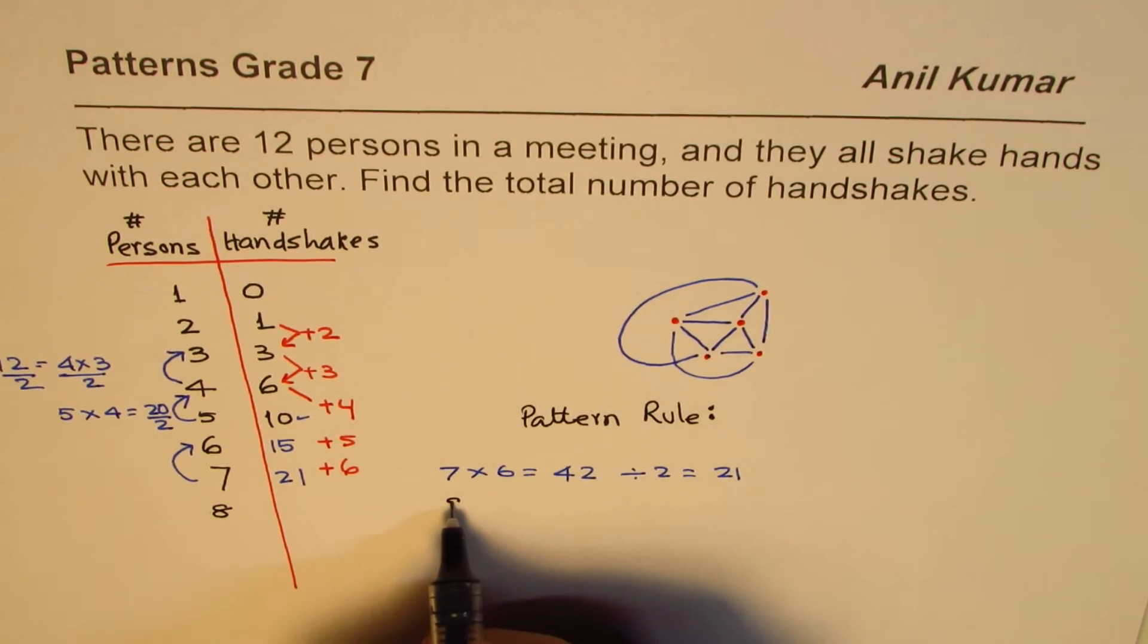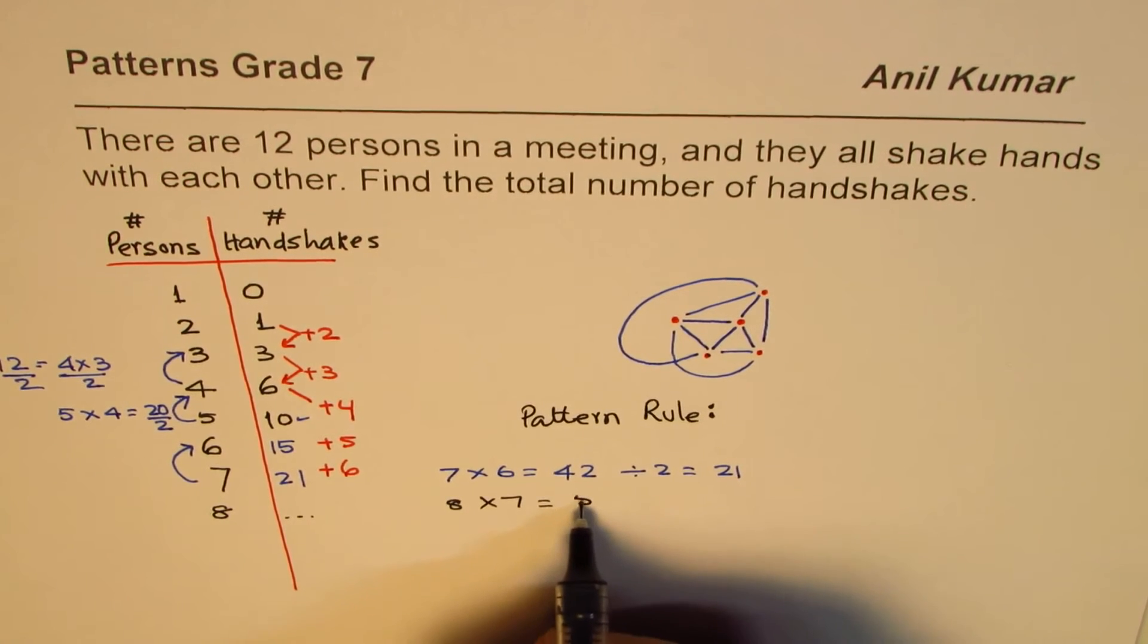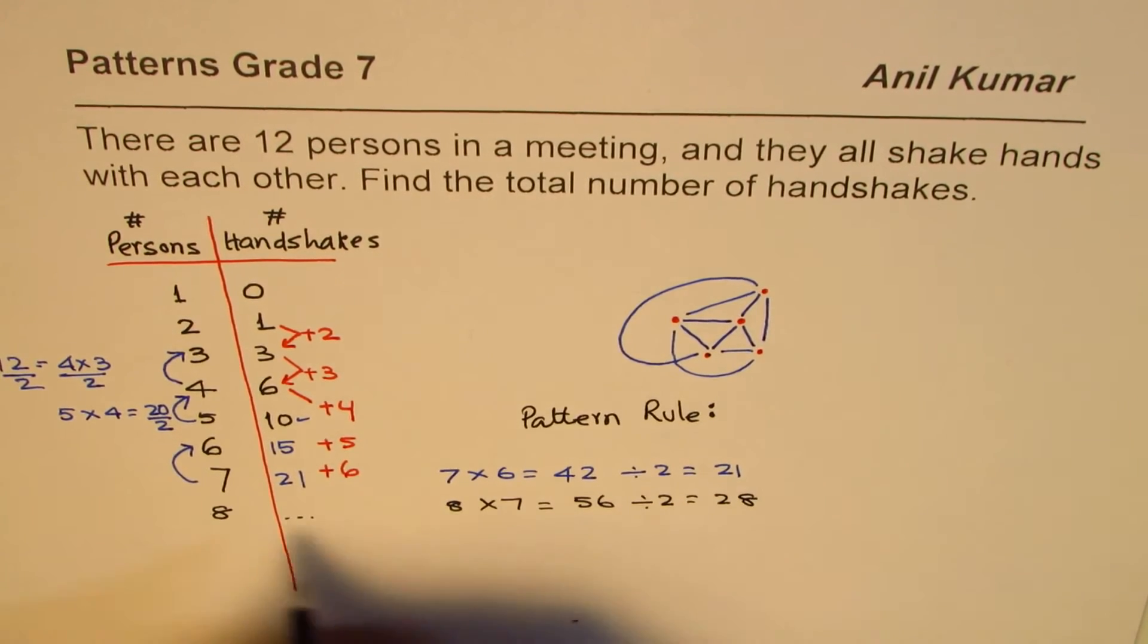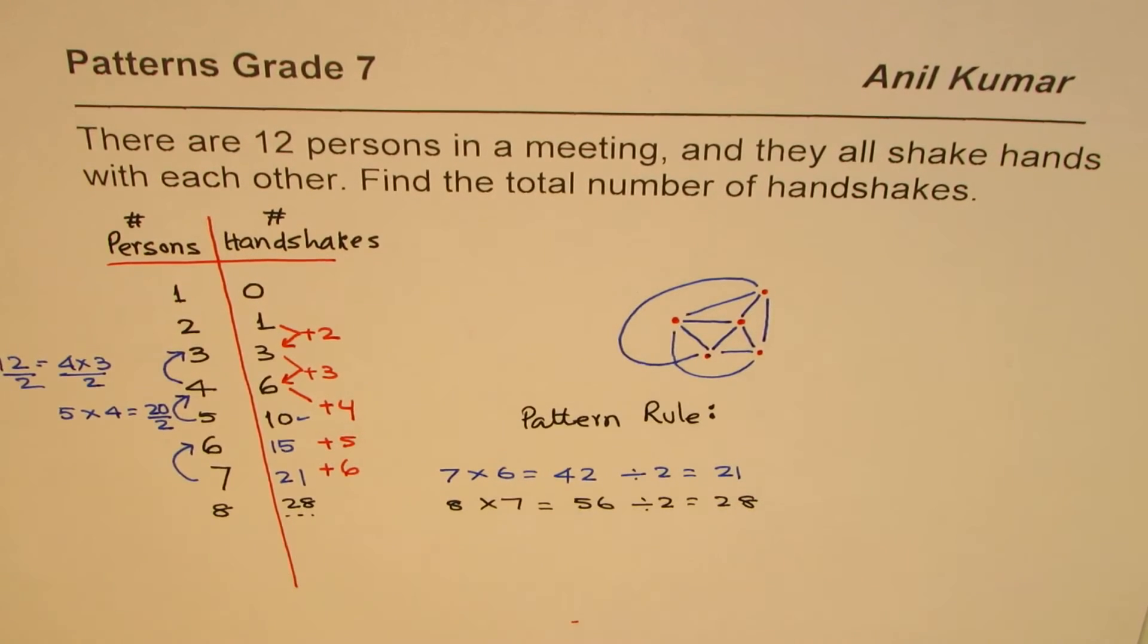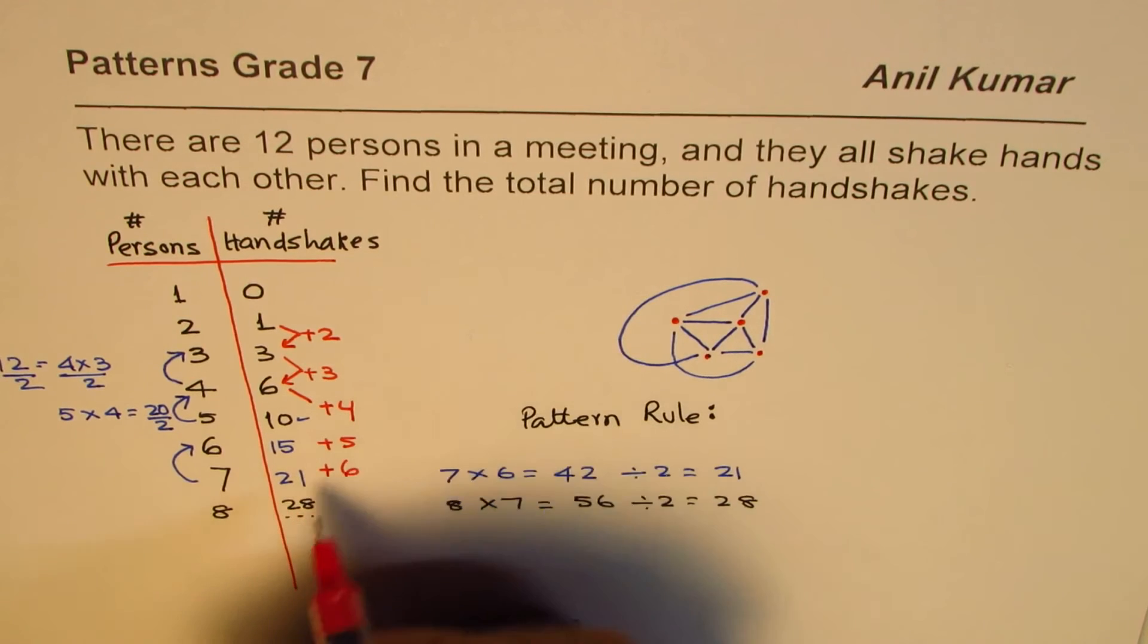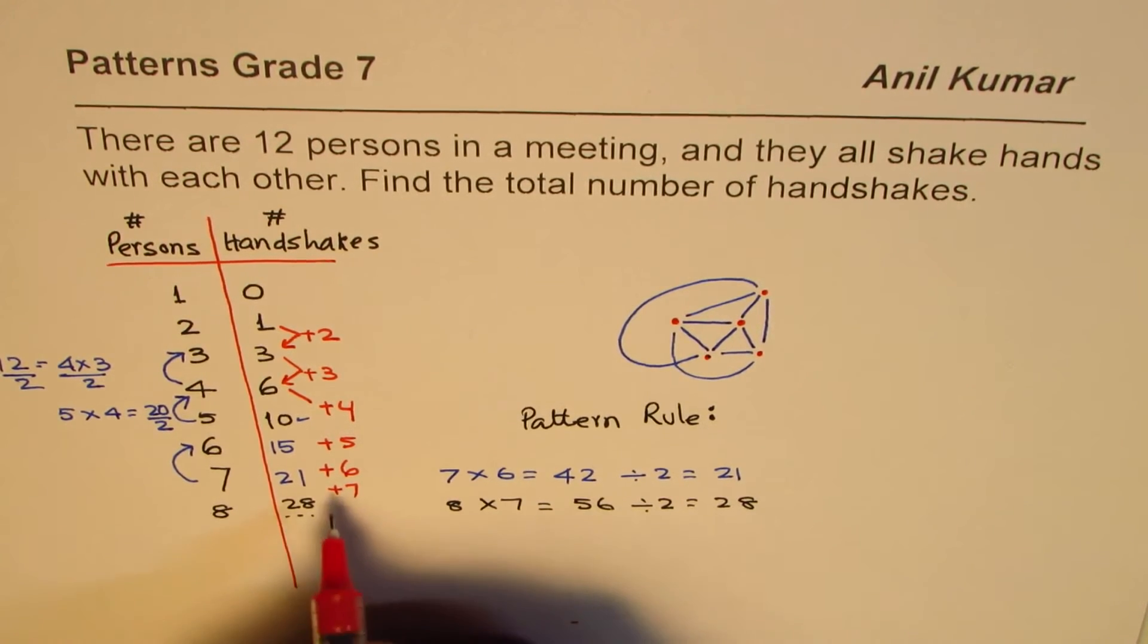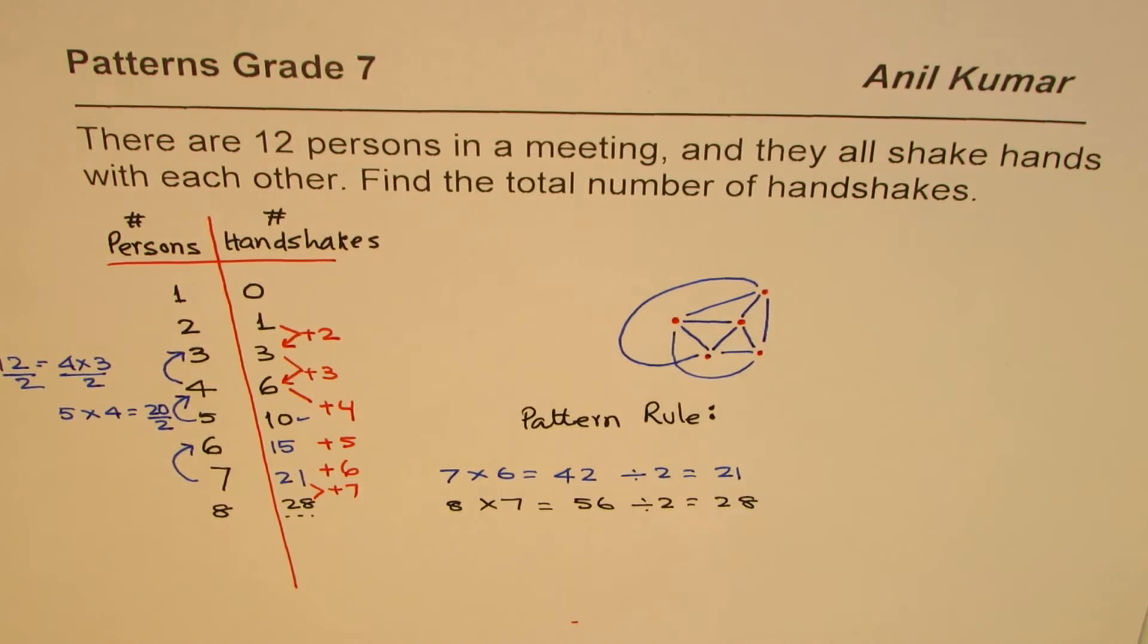So let me write 28 and check with the rule which we are following. 21 plus 7 should give me 28. It does. Do you see that? So it means this rule works.